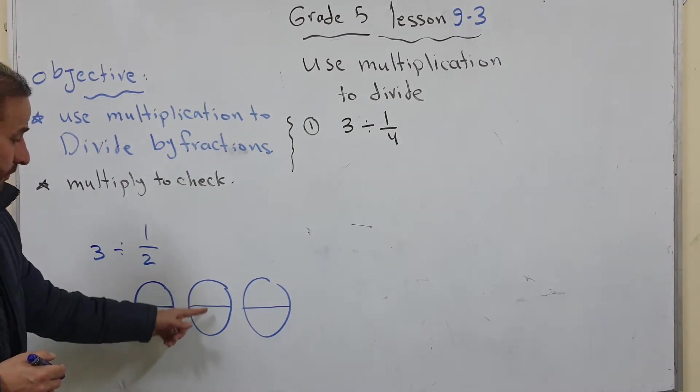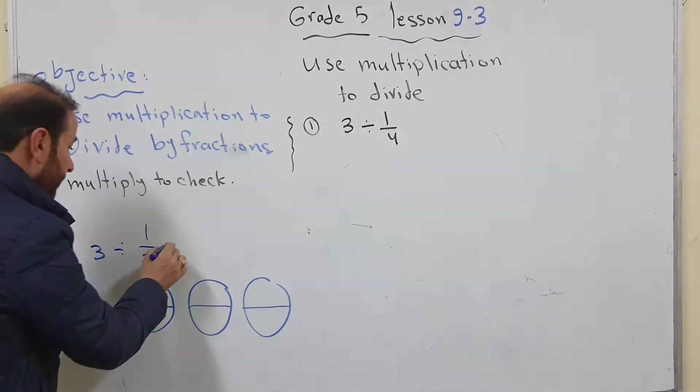So if you count the halves then you know how many halves we have. 1, 2, 3, 4, 5, 6. So the answer will be 6.